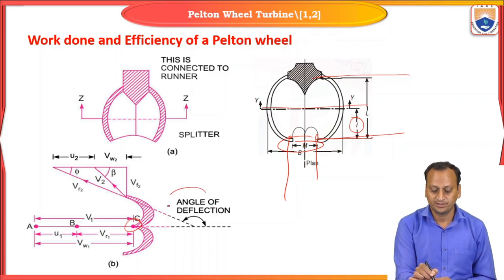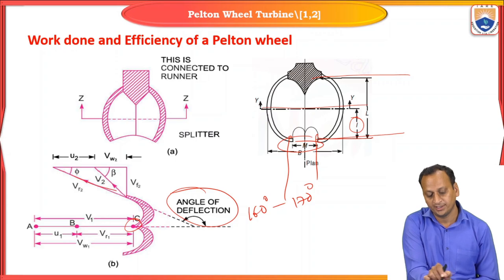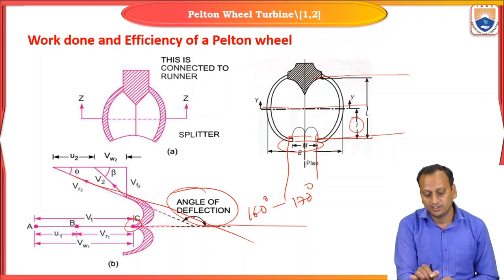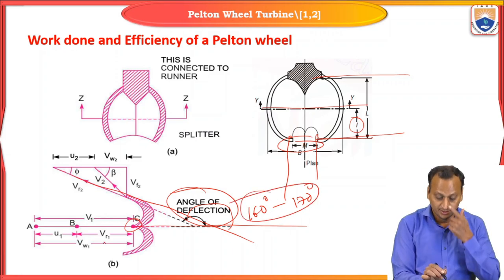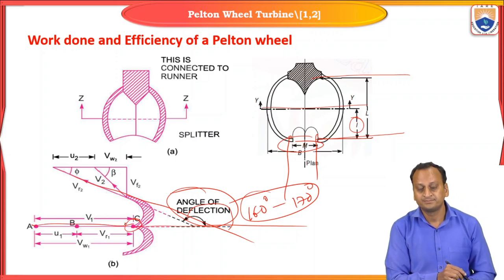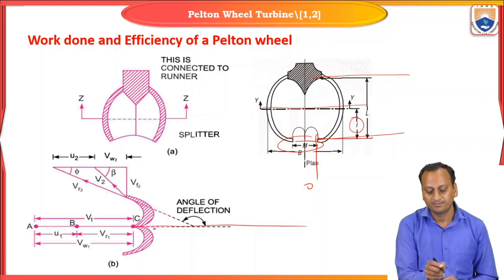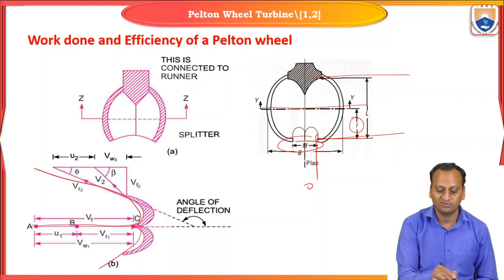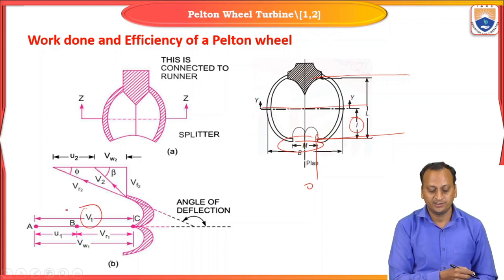There is an angle of deflection. In the previous class we found that the angle of deflection is about 160 to 170 degrees. The angle of deflection is the angle between Vr2 extended over the turbine and the line from the bucket tip extended from the splitter. The jet is applied on the splitter; therefore the inlet velocity triangle is a straight line at the inlet to the Pelton wheel turbine. As the jet impacts the splitter, it comes as two halves.